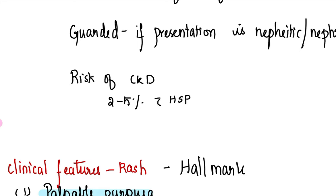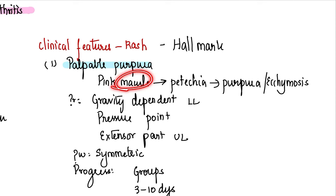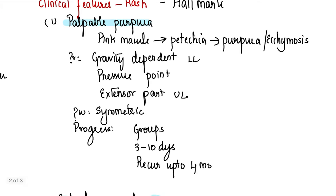What about rash? If somebody asks you which is the hallmark of Henoch-Schonlein purpura, you will tell it as rash. Rash is the hallmark of Henoch-Schonlein purpura. It starts as a macule, then evolves into a petechiae, purpura, and confluent ecchymosis. Where does it happen? It happens in gravity-dependent areas: the lower limb, pressure points like your buttocks, extensor part of upper limb can be involved, sometimes face also can be involved.